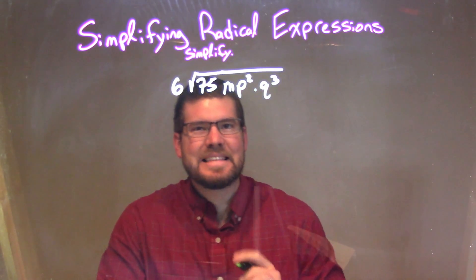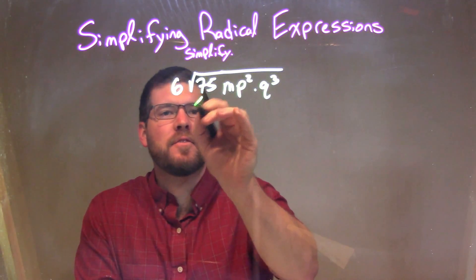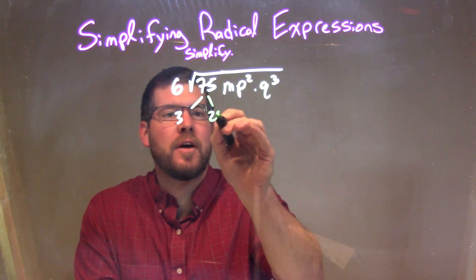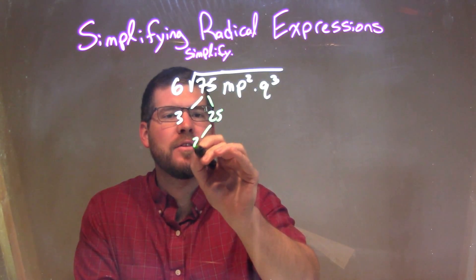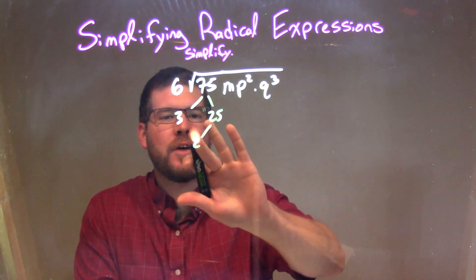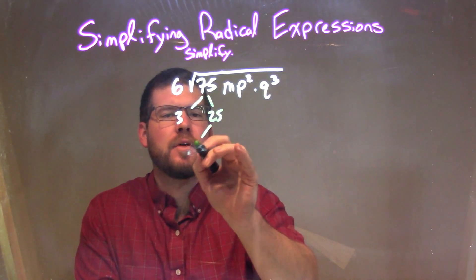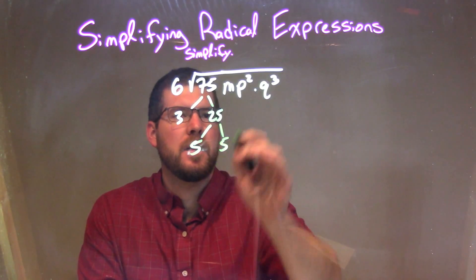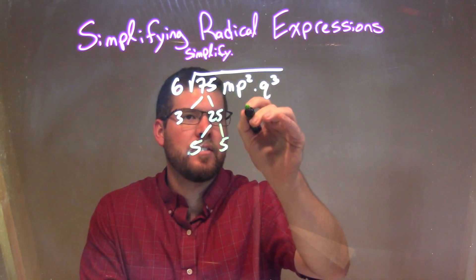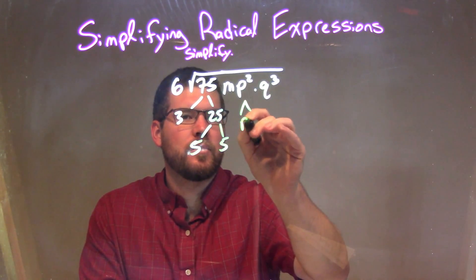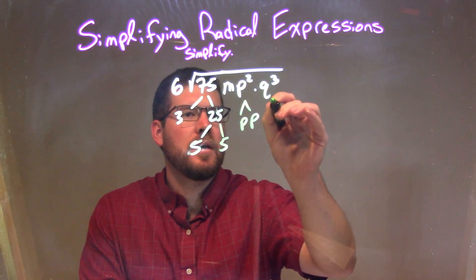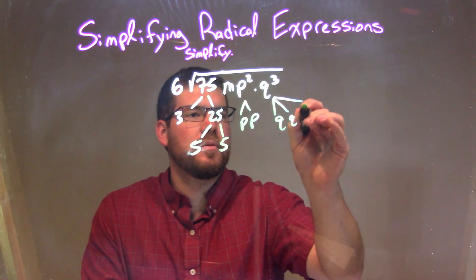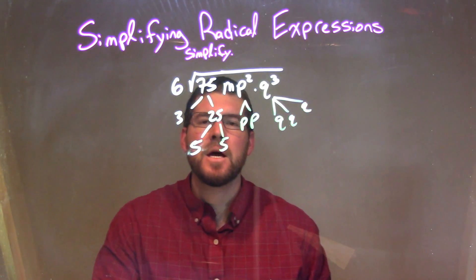Well, let's go break this down. 75 breaks down to be 3 and 25, and 25 is just 5 and 5. m is by itself, p squared is just p times p, and q to the third is just q times q times q.